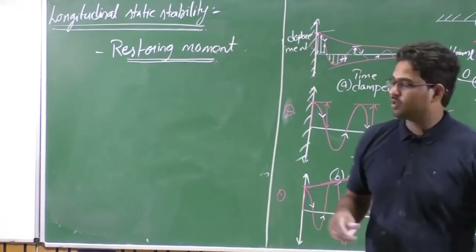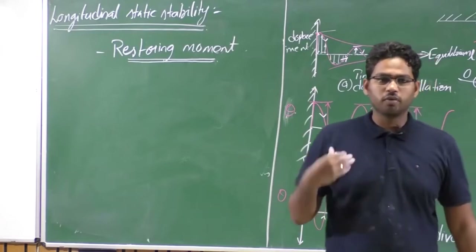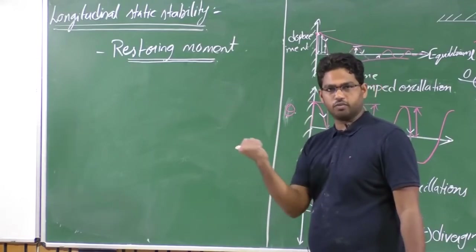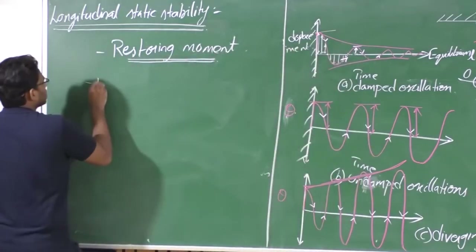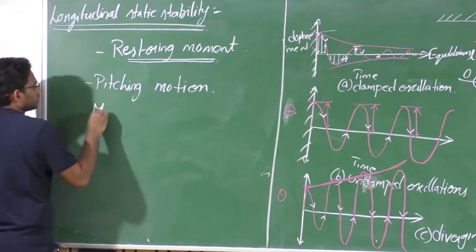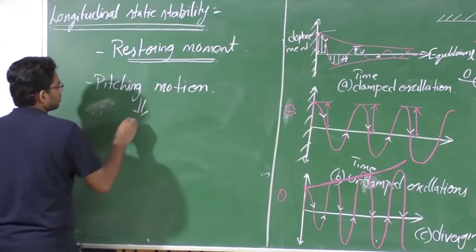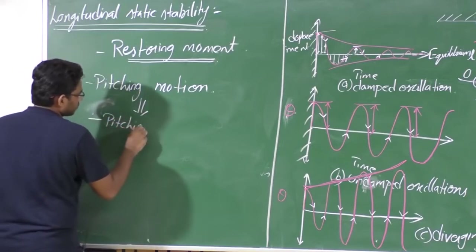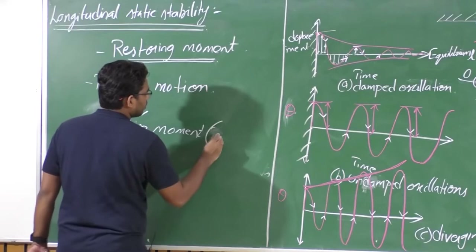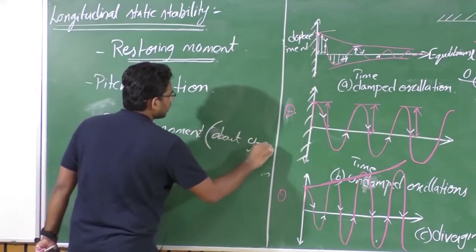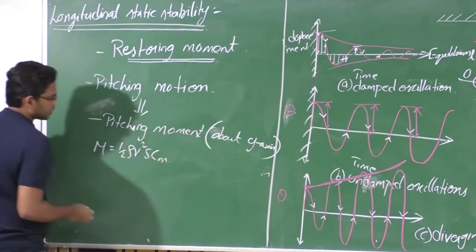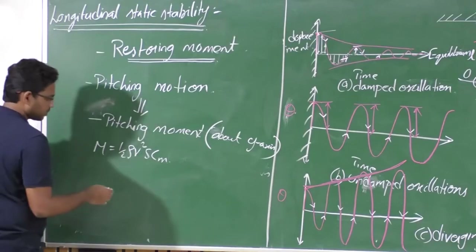Getting back to the aircraft — when talking about the longitudinal case, the relevant moment is a pitch-up motion, which is rotation about the body y-axis, i.e., the pitching motion. The pitching moment M is given by M = ½ρV²·Cm·c̄. Pitch up is considered positive and pitch down is considered negative. When the pitching moment M is positive, this implies Cm is also positive, and vice versa.